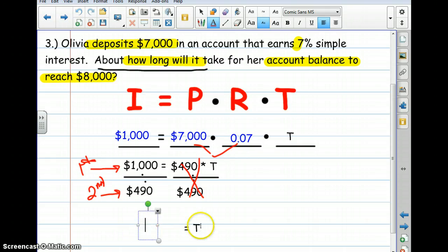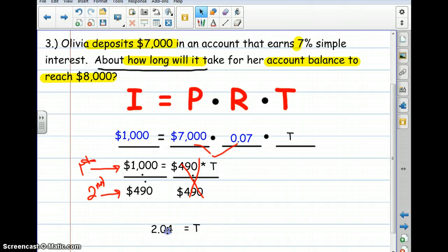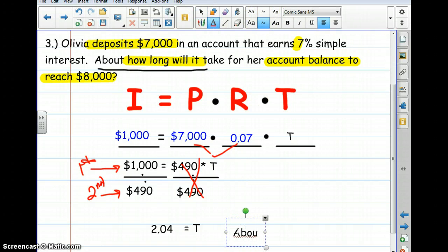You should come out with a decimal answer: 2.0408. We're just going to round it to the nearest tenth, so 2.04 - that's the amount of time. Remember the question asked us about how long will it take, so our answer to this is going to be about 2 years. That means it's going to take about two years to earn $1,000 if our interest rate is 7% and we deposit $7,000.